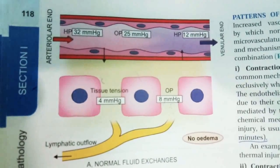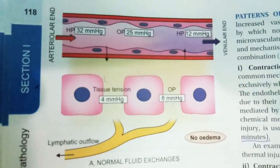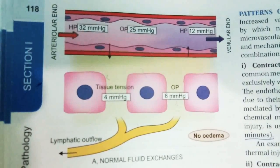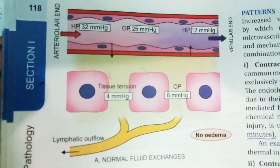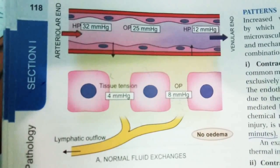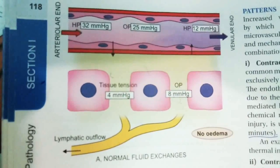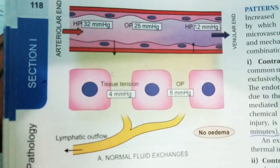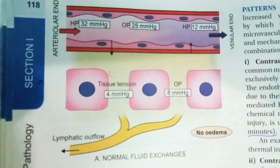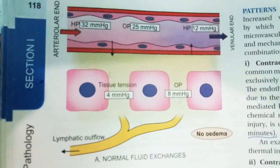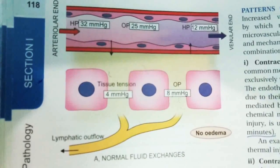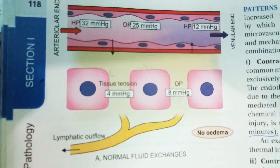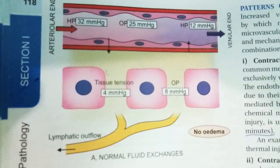As seen in the diagram, the outward movement is carried out by increased intravascular hydrostatic pressure and the colloid osmotic pressure of the interstitial fluid. The inward movement is driven by increased hydrostatic pressure and intravascular colloid osmotic pressure. In normal fluid exchange, hydrostatic and osmotic pressures at the arterial and venular ends are balanced, and remaining fluid is carried out by lymphatic outflow, so there is no edema.